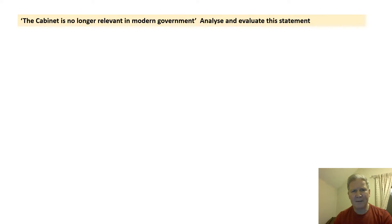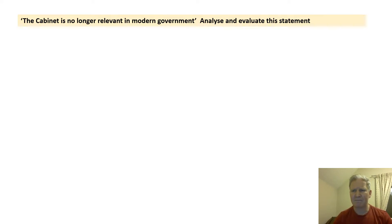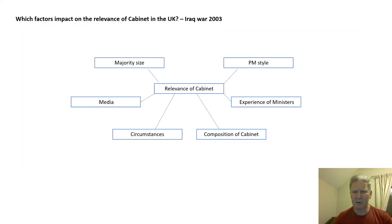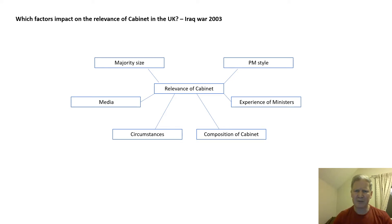Our work at the minute is looking at the cabinet and how relevant it is in modern government. So far we've looked at the IMF crisis in 1976 and the Westland affair in 1986. Today we move on to look at the Iraq war in 2003, our third prime minister in this study. We're considering factors relevant to the cabinet's use: majority size, political context, experience of ministers, and impact. Remember: the IMF crisis had no ministerial resignations; the Westland affair had two.